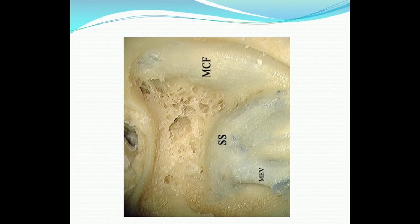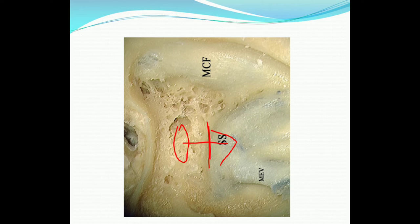Route of spread: this refers to how the disease process reaches the sigmoid sinus from the mastoid air cells. There are two routes of spread: one is by direct bone erosion, and the second route is via venous thrombophlebitis.